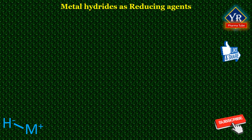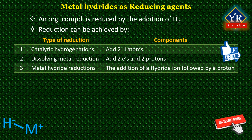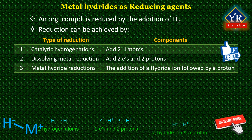Metal hydrides as reducing agents: an organic compound is reduced by the addition of hydrogen. Reduction can be achieved by one of the following three mechanisms: number one, catalytic hydrogenation; number two, dissolving metal reduction; and number three, metal hydride reductions.